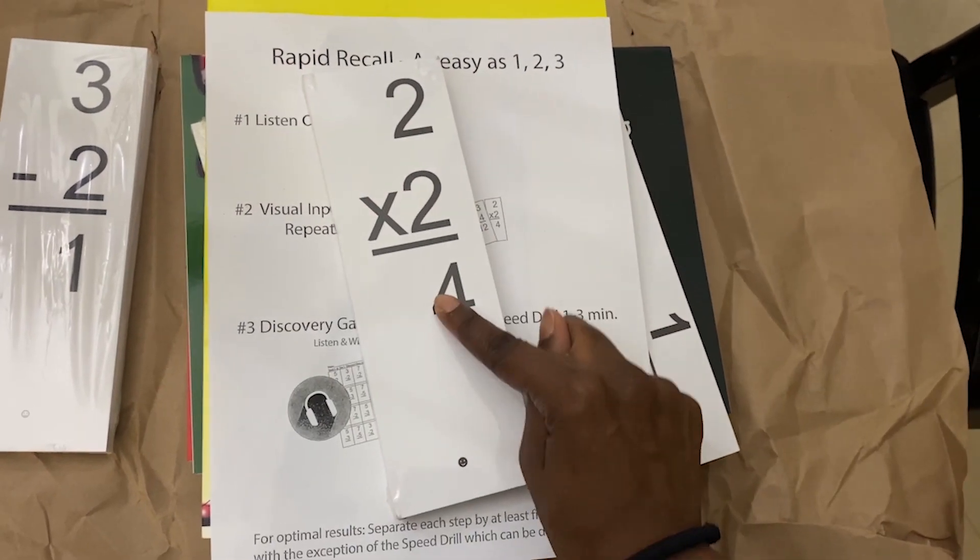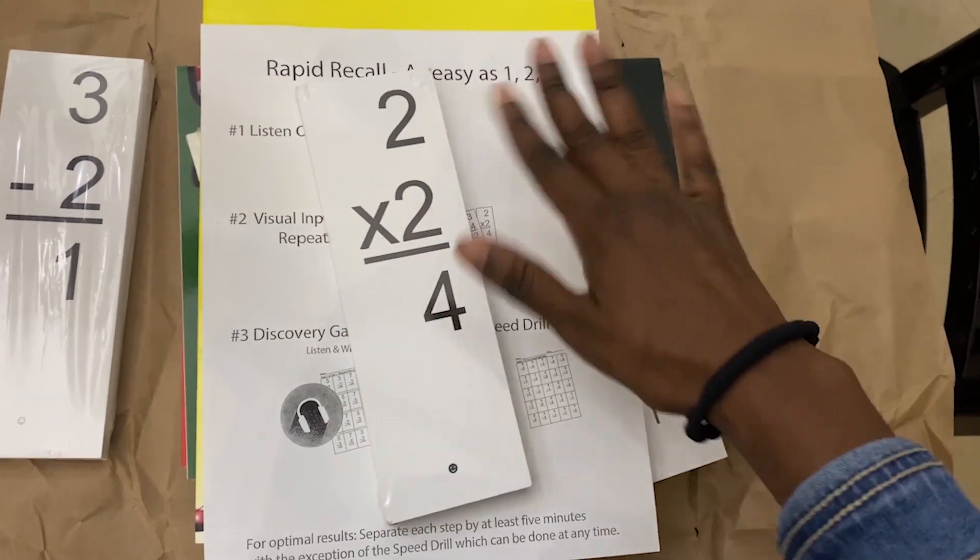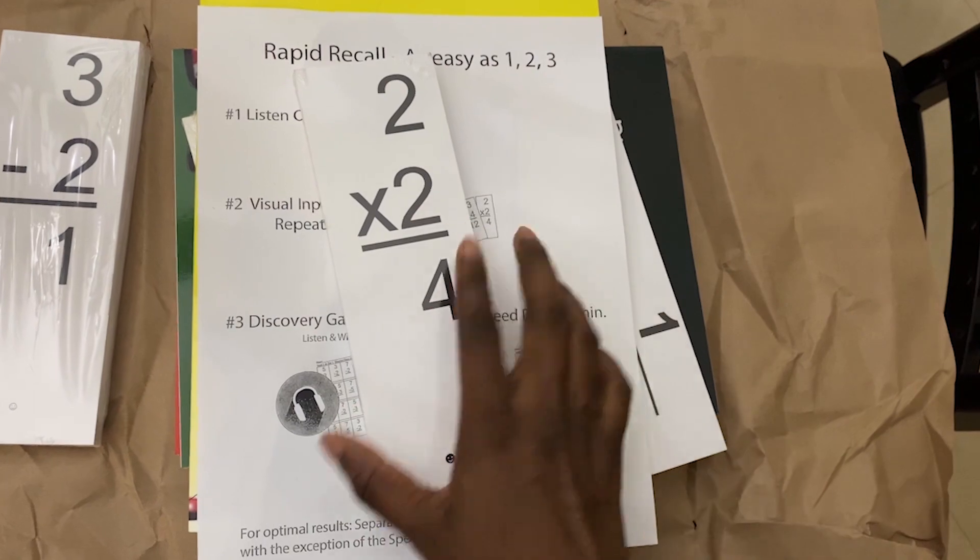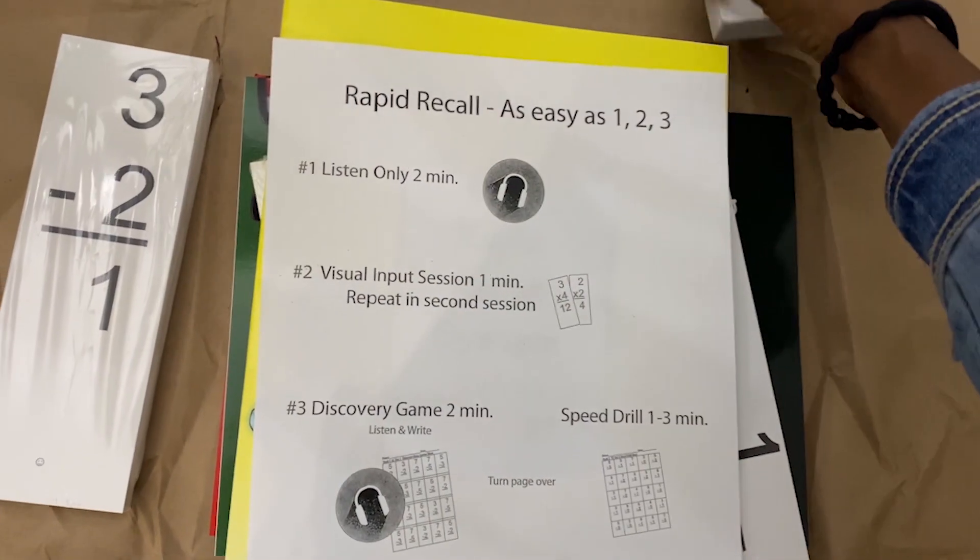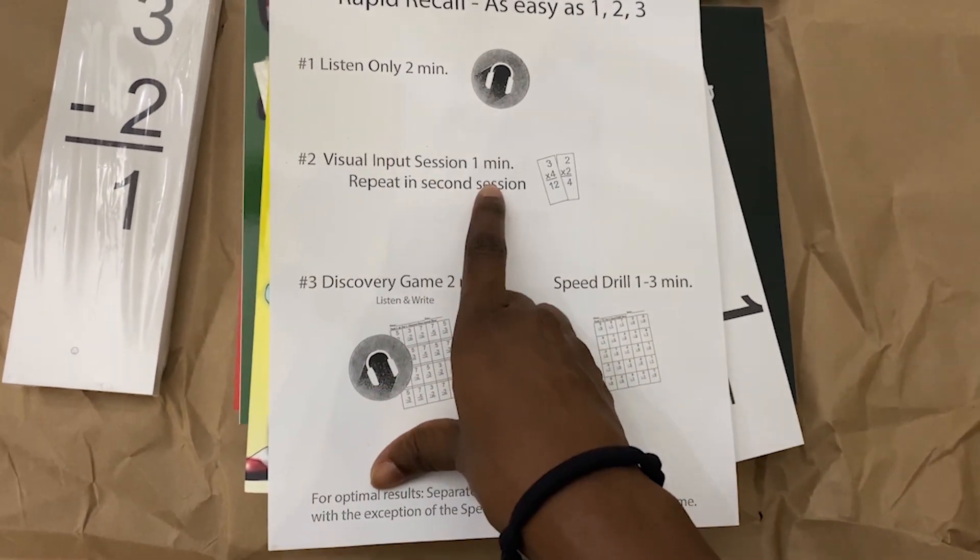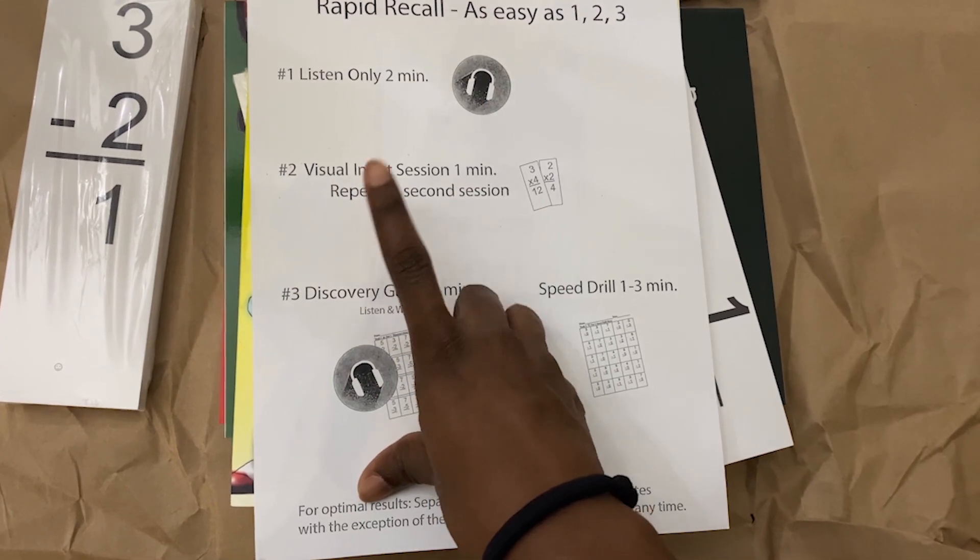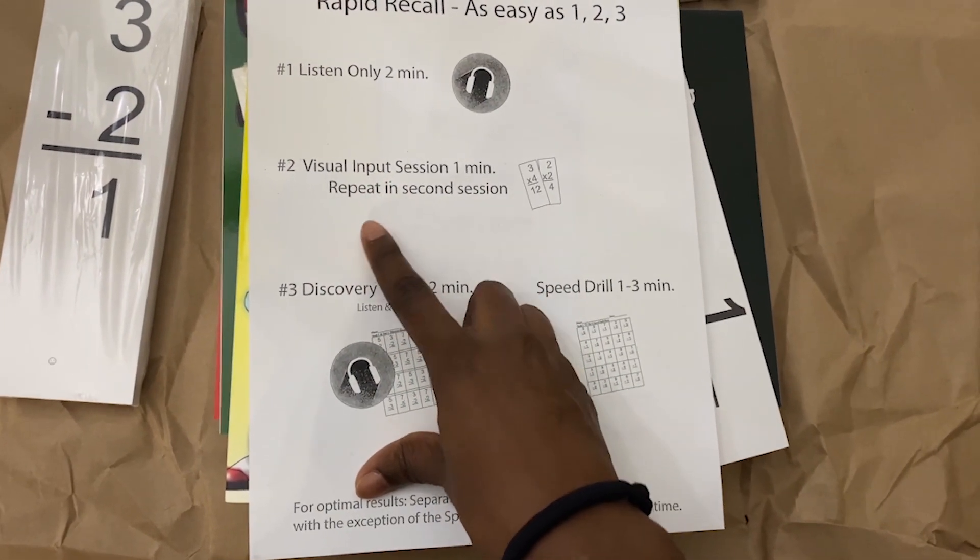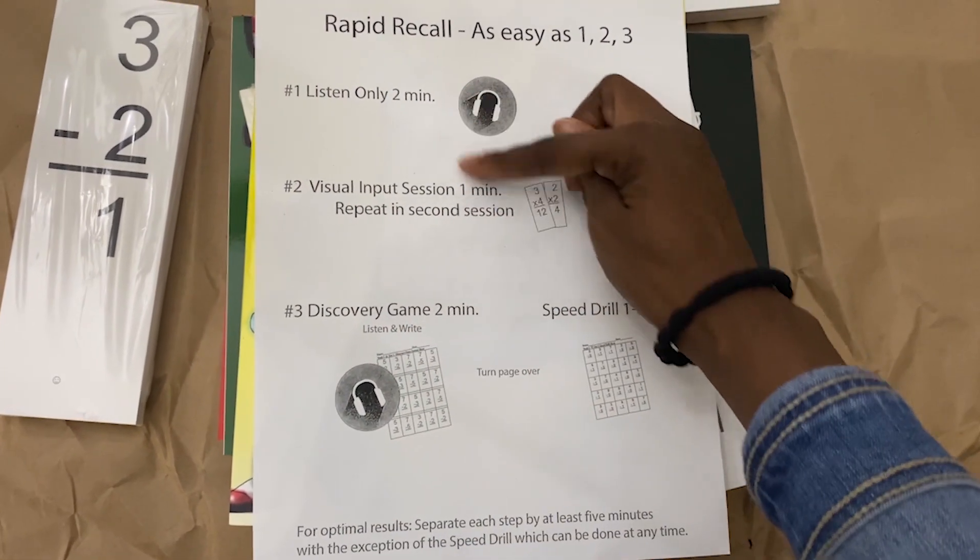'Two times two equals four, two times two equals four,' and whatever other set of problems they have for that day. They'll do that for one minute, then again at another point throughout the day for another minute. So right now we're at four minutes.